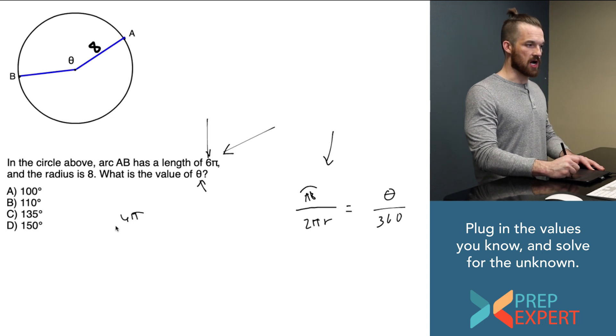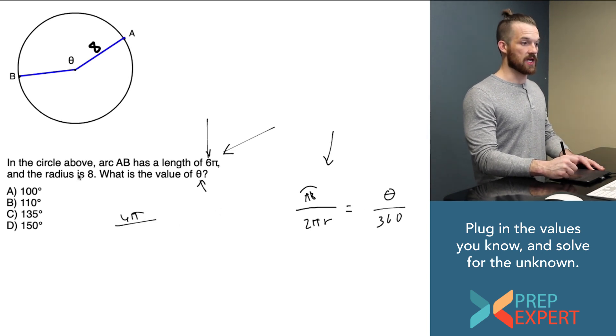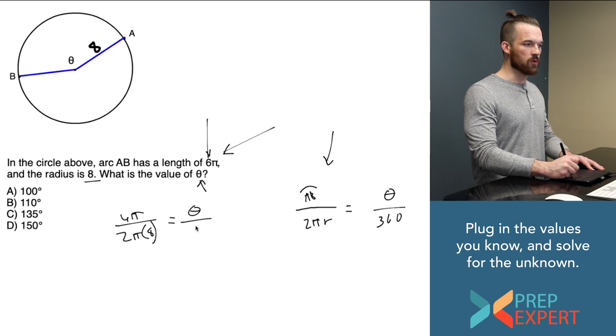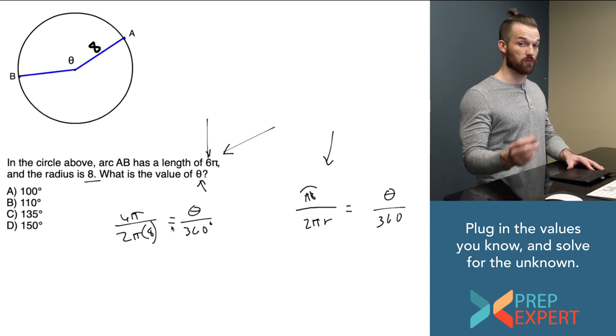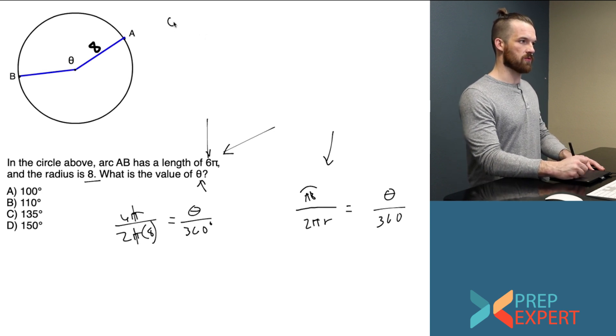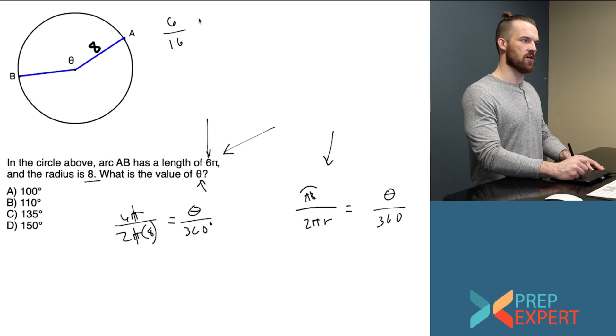They tell me arc length AB is 6π, so I plug in 6π for AB and I know that the radius is 8 so I can plug that in down here. And now I have only one remaining unknown which means I can now solve for theta.